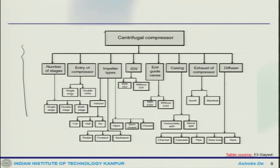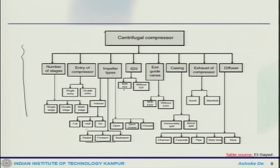Regarding the entry of the compressor, it could be single entry or double entry. There are different kinds of impeller: one type could be an inducer, then there are variations — full, half, or none — and it could be radial, forward, or backward type, or open, semi-closed, or closed. So mix and matches like radial open, radial semi-closed, radial closed, or forward open are all possible. Then you have IGB — inlet guide vane — so one possibility has an IGB, and another possibility is without IGB.